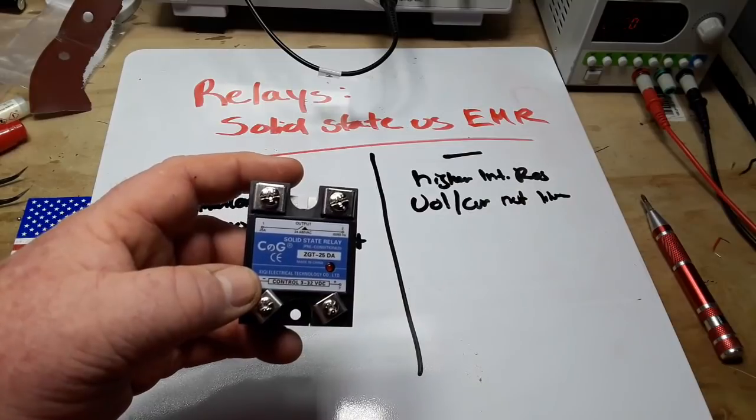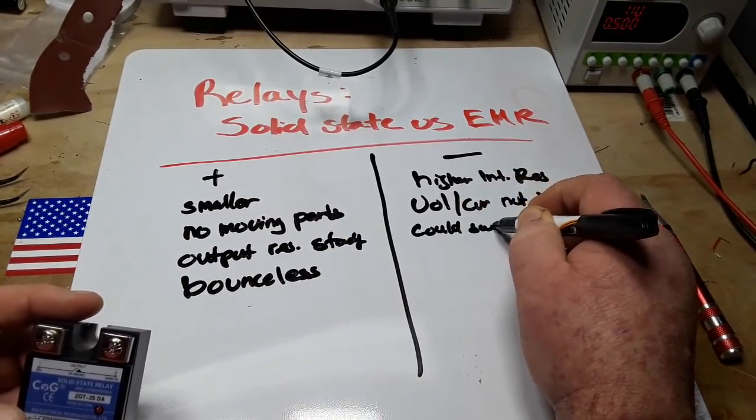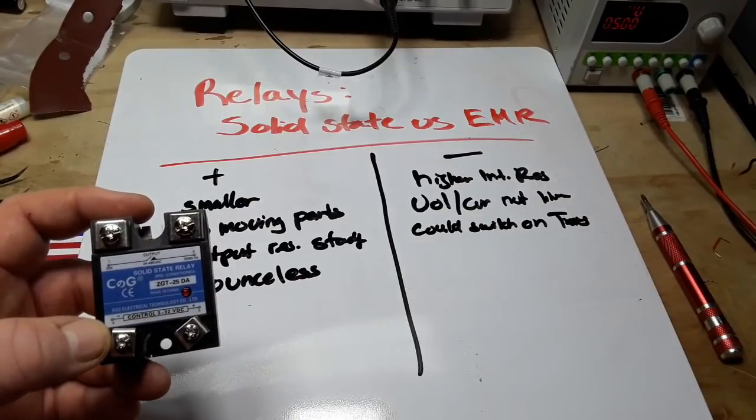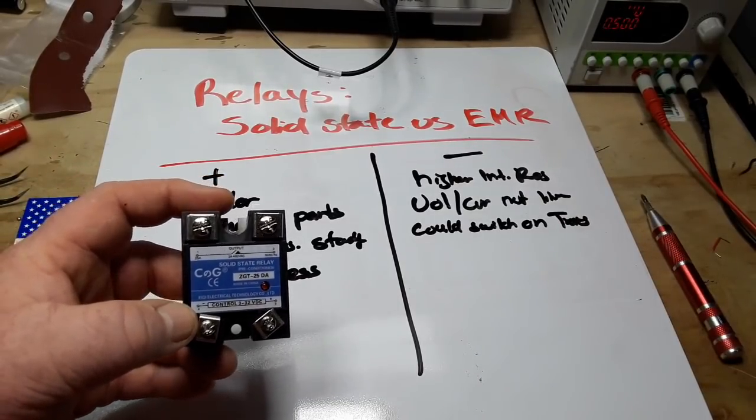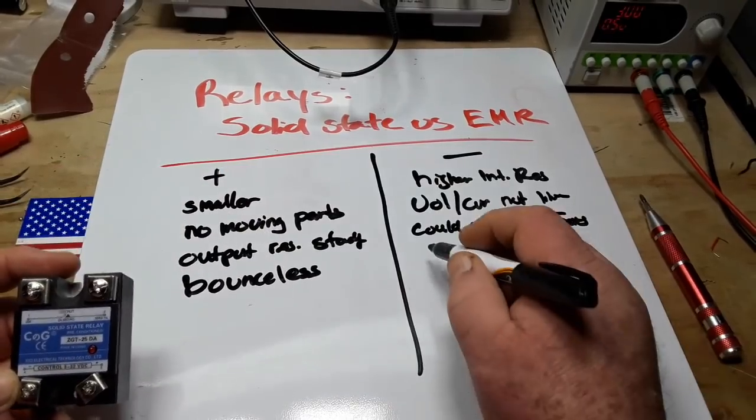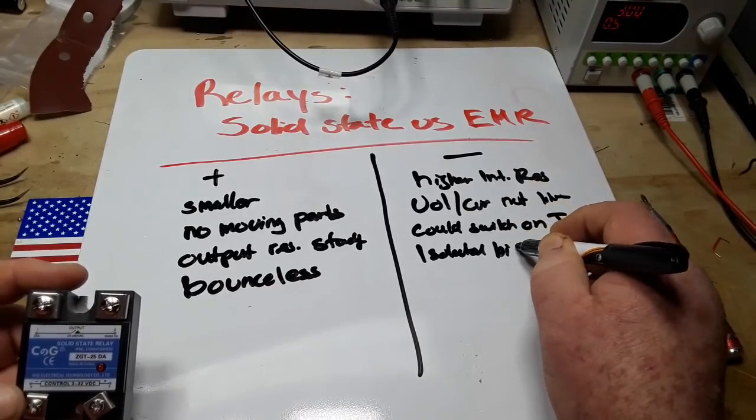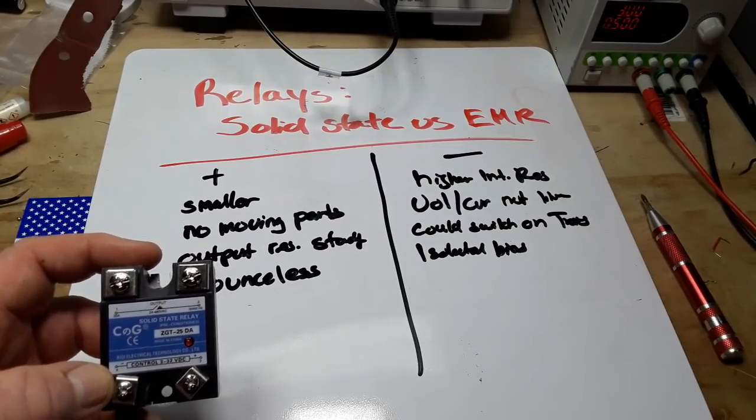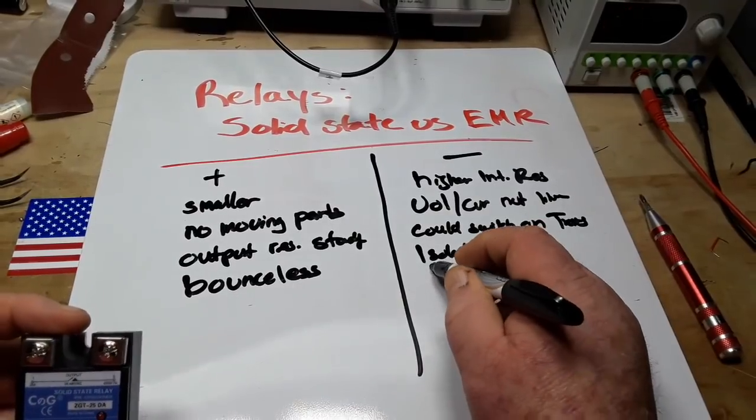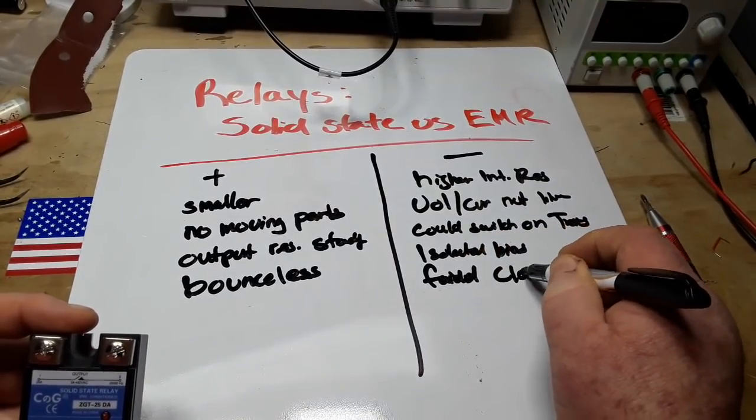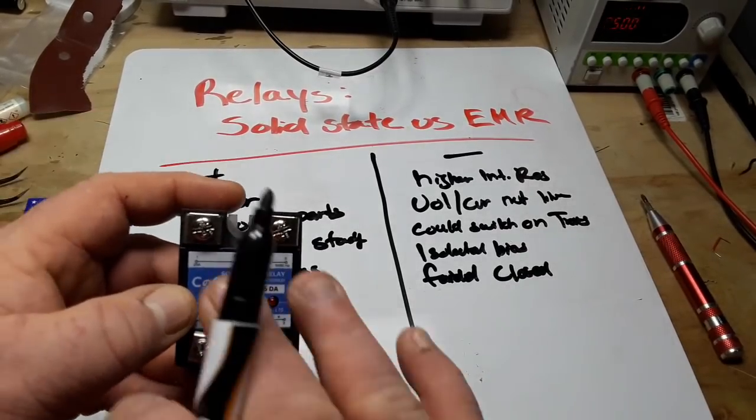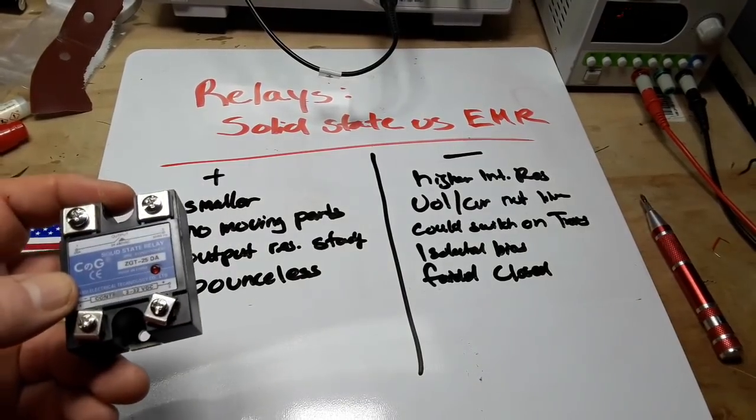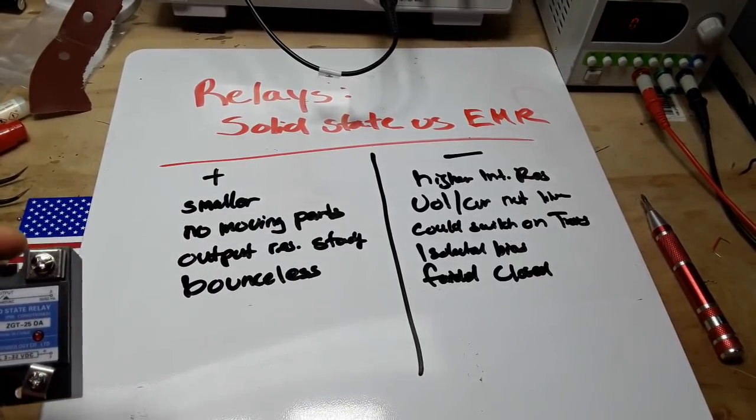There is a possibility that they could switch on transients. So if there was a strong spike somewhere else in the circuit, it could set this off. They also require an isolated bias supply. Not really a big deal, but you don't necessarily need that on an electromechanical relay. And what I find to be the biggest fault is they fail closed. So if they fail, they generally fail with the output on, as opposed to an electromechanical relay, which will generally fail with the output off. To me, that's a big thing, but whatever you need for your application.